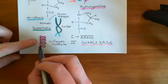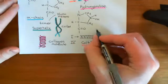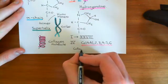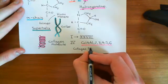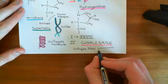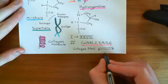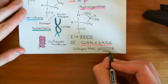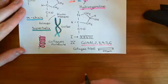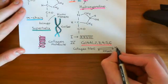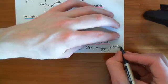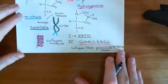These collagen molecules can aggregate together to make a much bigger fiber, called a collagen fibril, which is visible with electron microscopy. Collagen fibrils are generally around a few hundred micrometers in length and around 10 to 300 nanometers in diameter — a much thinner diameter than their length — and they are visible with the electron microscope.